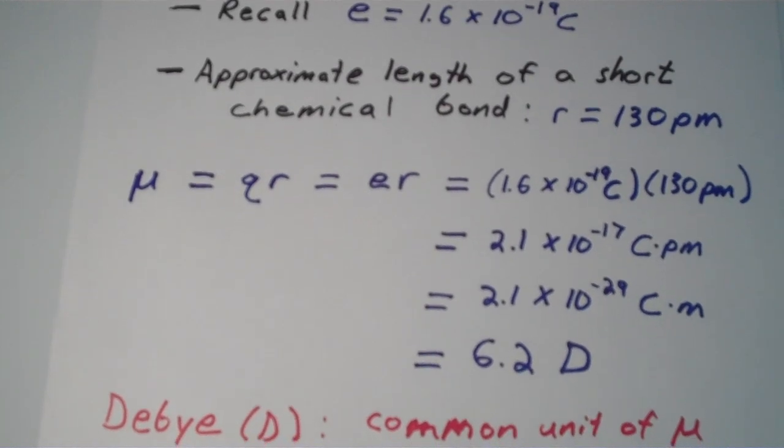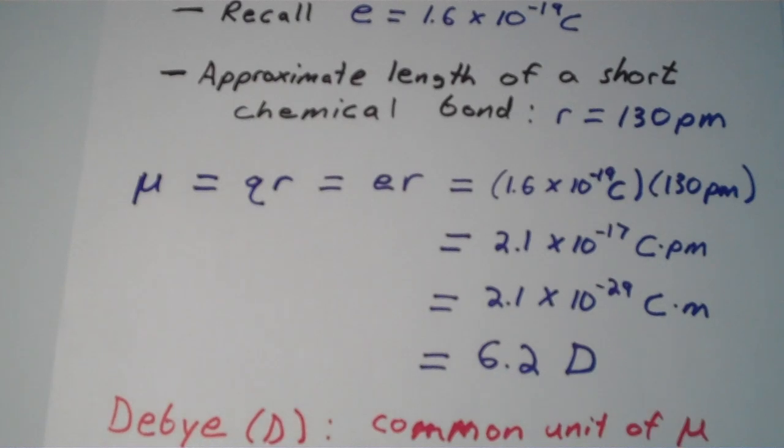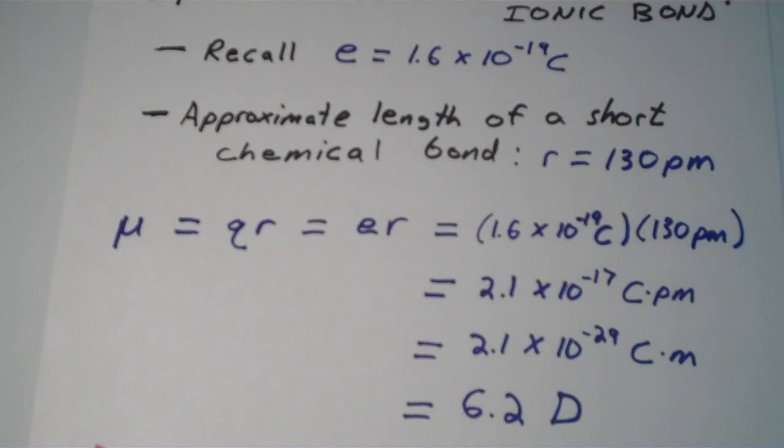With that in mind, we get an approximate dipole moment for a completely ionic bond, where the length of the bond is 130 picometers of 6.2 Debyes.